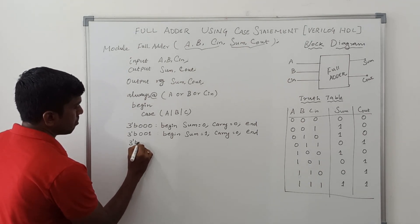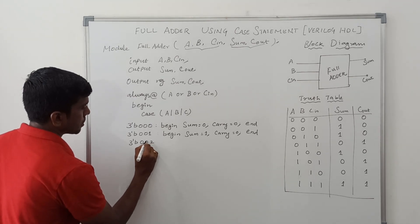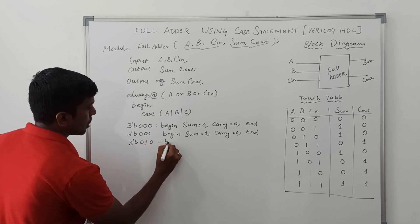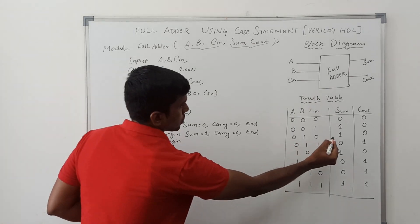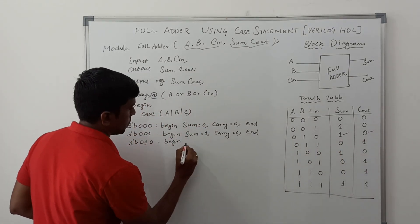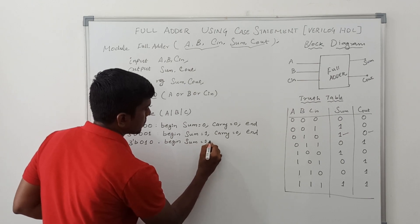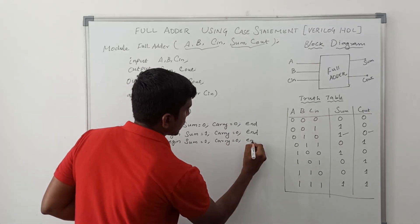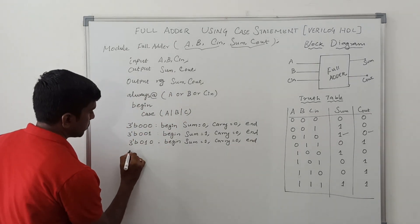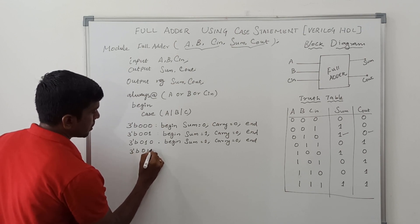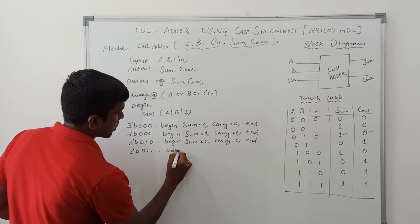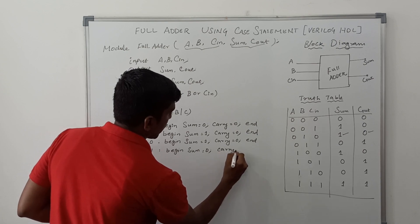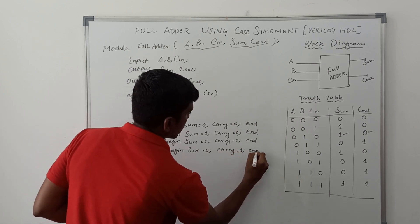The next input is 3'b010, begin: Sum = 1, Cout = 0. End. The next one 3'b011, begin: Sum = 0, Cout = 1. End.